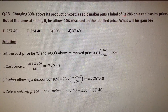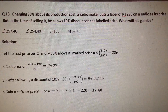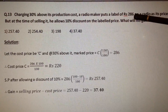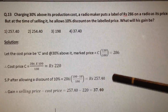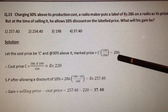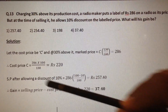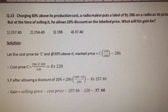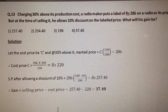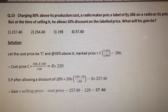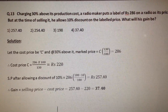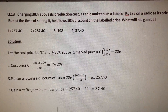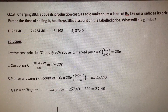Let the cost price of the radio be C. Charging 30% above the production cost, his market price is 286. So if the cost price is C, the market price becomes C into 130 by 100, which is given as 286. Therefore, cost price C is equal to 286 into 100 by 130, which is equal to Rs. 220. Now he gives a discount of 10% on the label price. Therefore, selling price after allowing a discount of 10% is equal to 286 into 90 by 100, which is equal to Rs. 257.40.